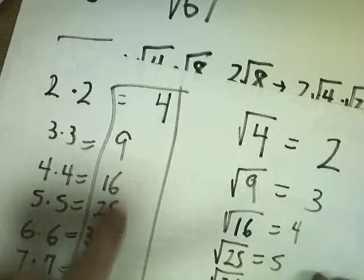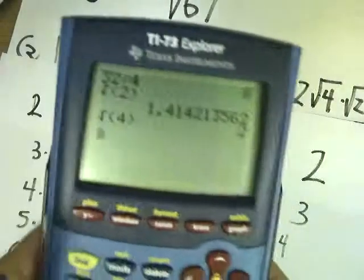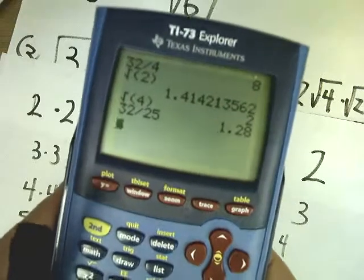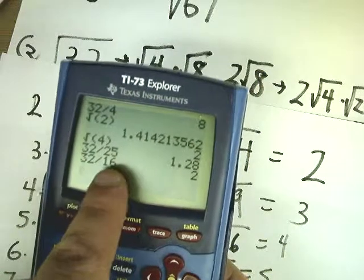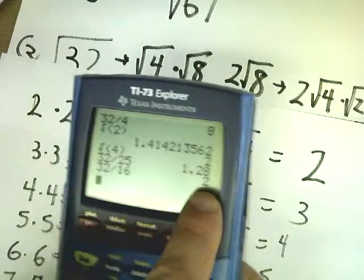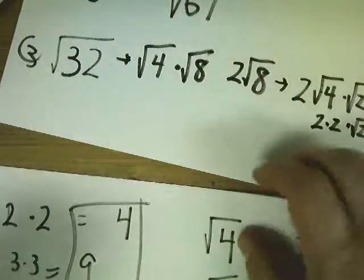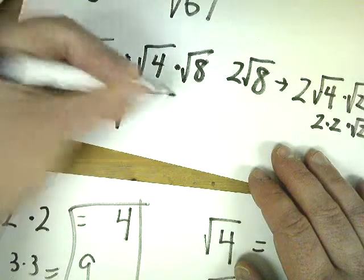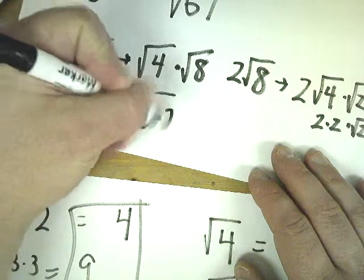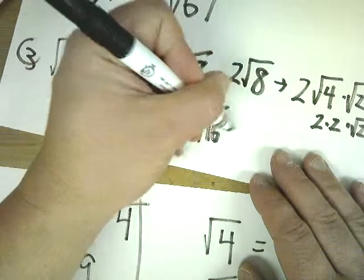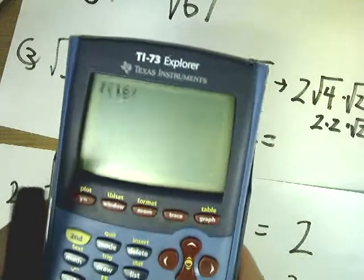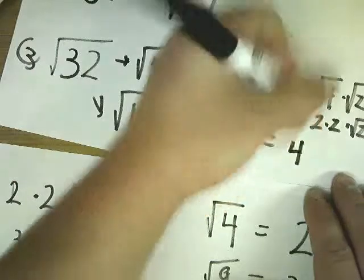If we start from the top of the list, it becomes much easier. 32 divided by 25? No. 32 divided by 16? That actually works. So I'm going to rewrite this as the square root of 16 times 2. I break that into individual parts: the square root of 16 times the square root of 2. The square root of 16 is equal to 4, so my final answer is 4 times the square root of 2.